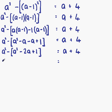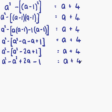Putting down our a squared at the start once more, we can now multiply out the big squared bracket. The minus sign outside means minus 1 times everything inside: minus 1 times a squared is minus a squared; minus 1 times minus 2a is plus 2a; minus 1 times plus 1 is minus 1. That's still equal to a plus 4. Now a squared minus a squared cancels out, leaving us with 2a minus 1 equals a plus 4.